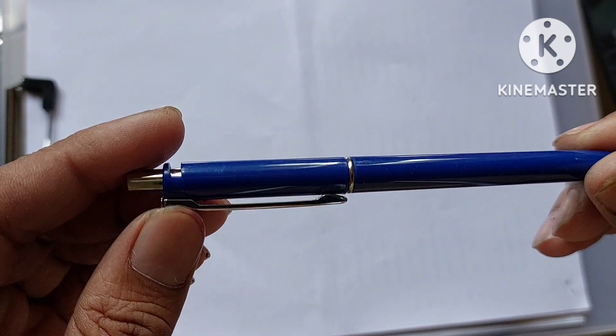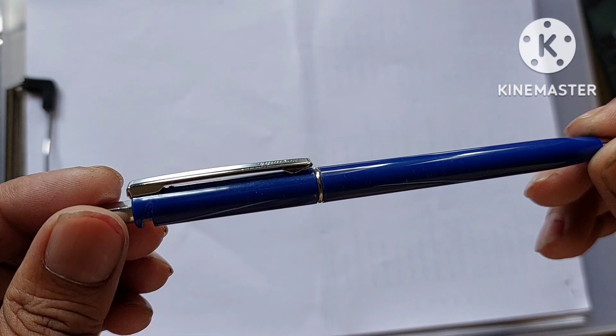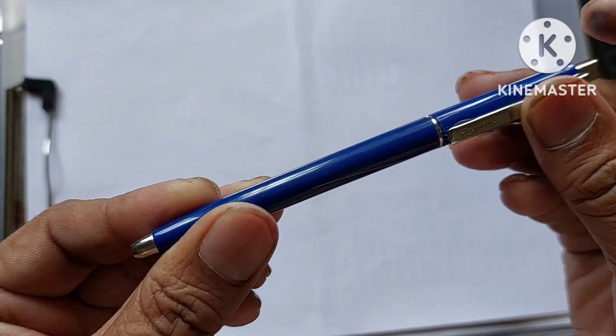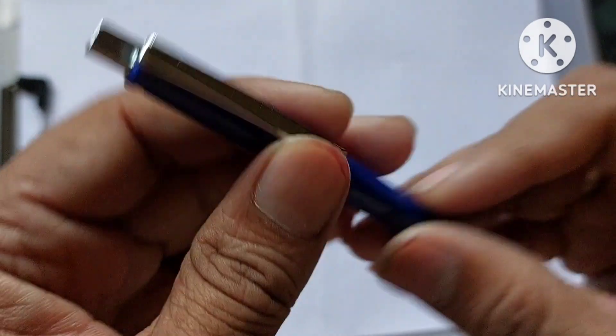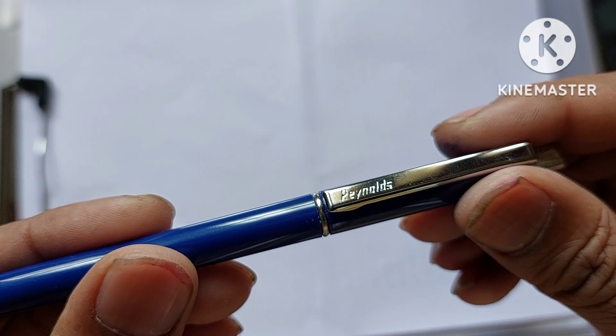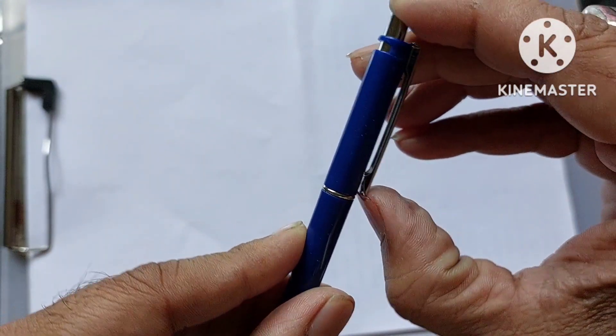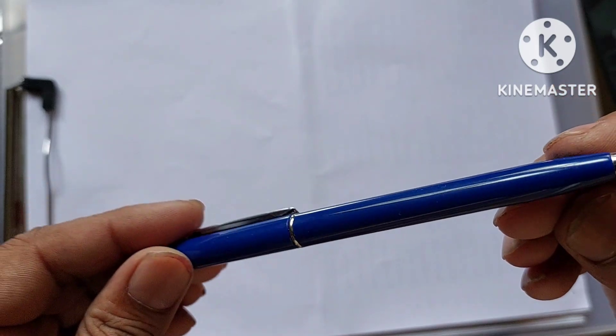You can see the shiny look of the pen, really beautiful. This comes with the clip mechanism and you can see the name Reynolds engraved on the clip. It has a silver clip, blue against silver clip looks really good.